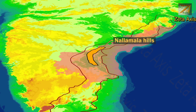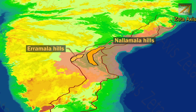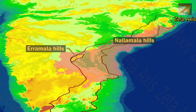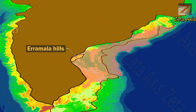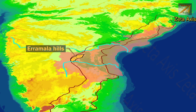The next important mountain range is the Erramala mountain range, located in Andhra Pradesh, west of the Nallamala hills, and also part of the Eastern Ghats. The Erramala hills are located on the edge of the Deccan Plateau. The Krishna river forms the northern margin of the Erramala hills, while the Peniru river marks the southern boundary.